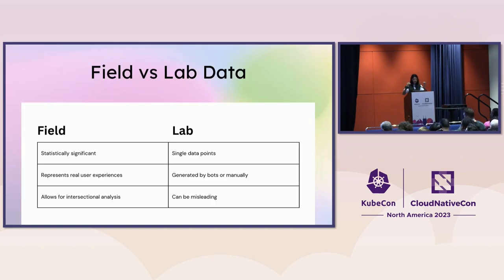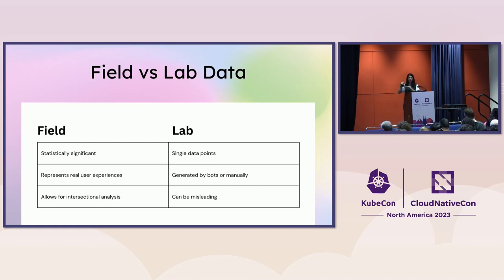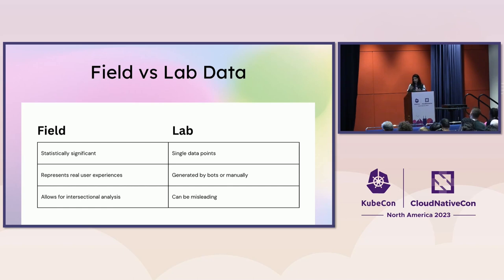There are two ways to measure things on the web. Synthetically — known as lab data — is where you run something like Google Lighthouse against your website; a bot hits your website and reports back a score. You can run that in CI and there are automated synthetics tools. It's still a really useful thing to have, but they're usually single data points generated by bots and can be misleading because they might not be where your users are or using the devices your users are using, giving you a skewed idea of performance. This is why it's really important to use field data — real user data.